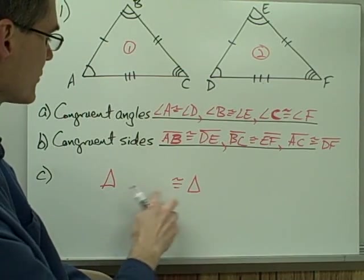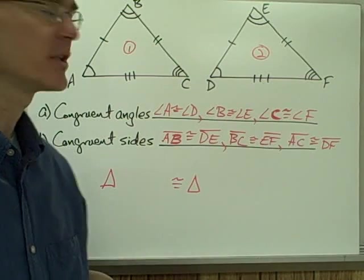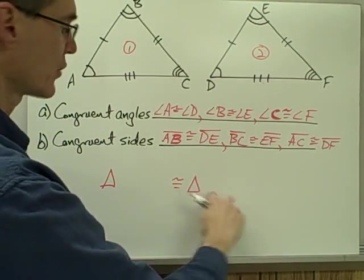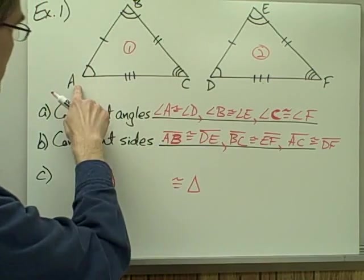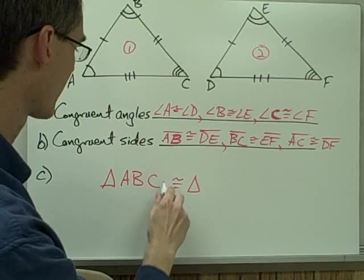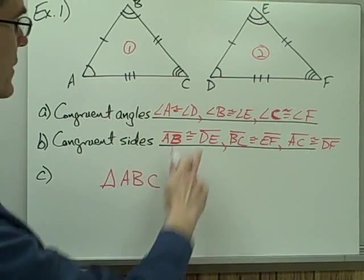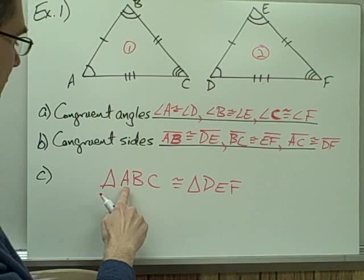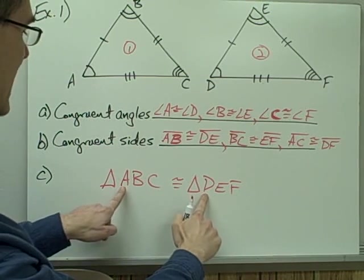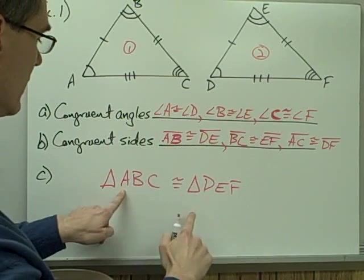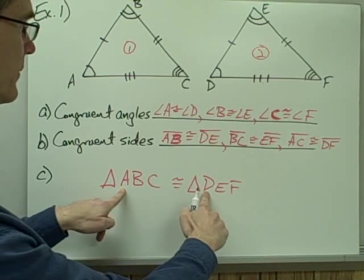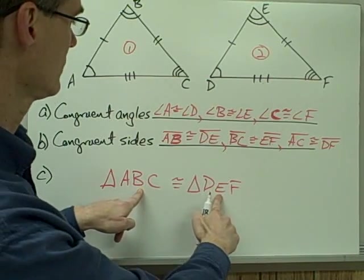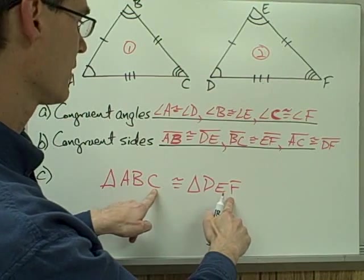Now I want to name the triangles in a very particular way. I want my congruent angles on triangle number one to match up with my congruent angles on triangle number two when I write down their vertices. So triangle ABC is congruent to triangle DEF. The reason I write the vertices in that order is because angle A is congruent to angle D — A and D are first. Angle B is congruent to angle E — that's the second letter. Angle C is congruent to angle F — that's the third.